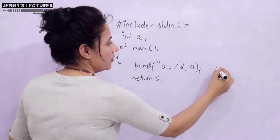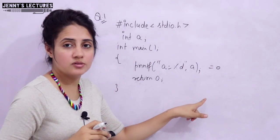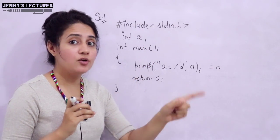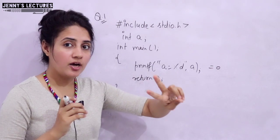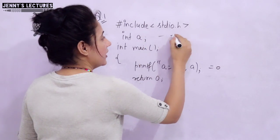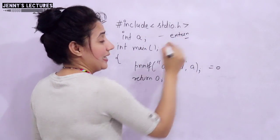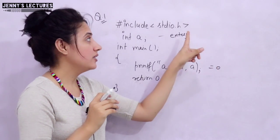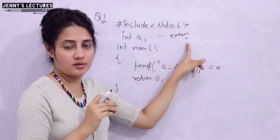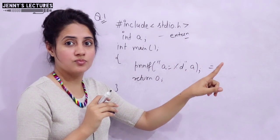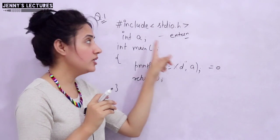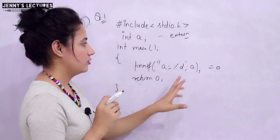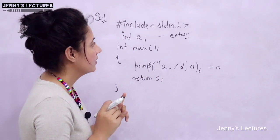The output of this code would be zero — by default global variables are assigned the zero value. The answer to the second question is that the global variable comes under the external storage class. When we discussed external storage class, I told you the default value for an external storage class variable is zero. So that global variable also has value zero — it does not come under auto, it comes under external.